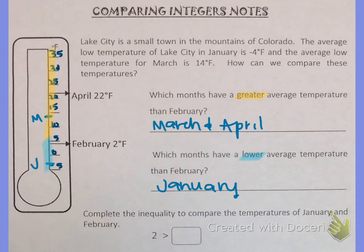So it says complete the inequality to compare the temperatures of January and February. Here it says 2 is greater than and we just need to put the temperature for January. January was negative 4 so negative 4 will go in that box.